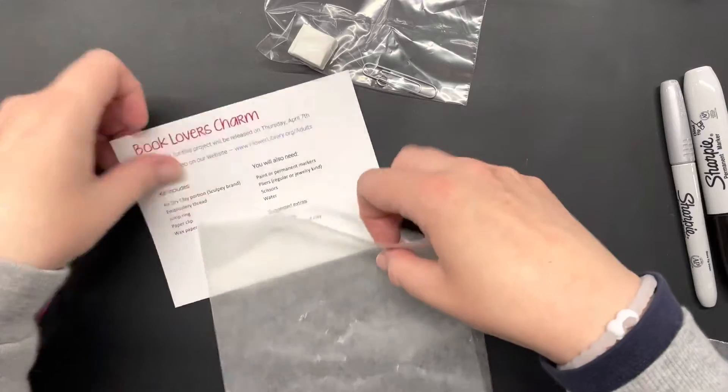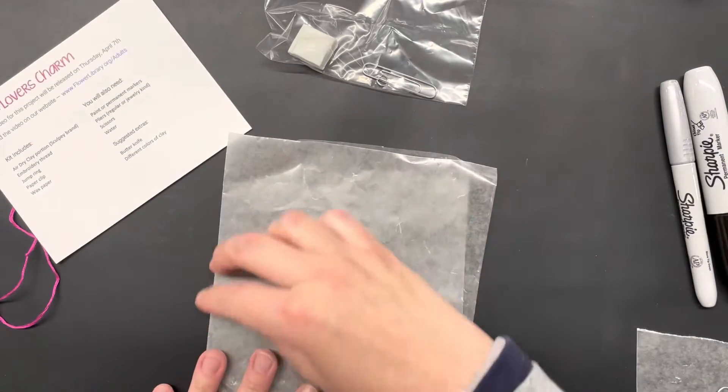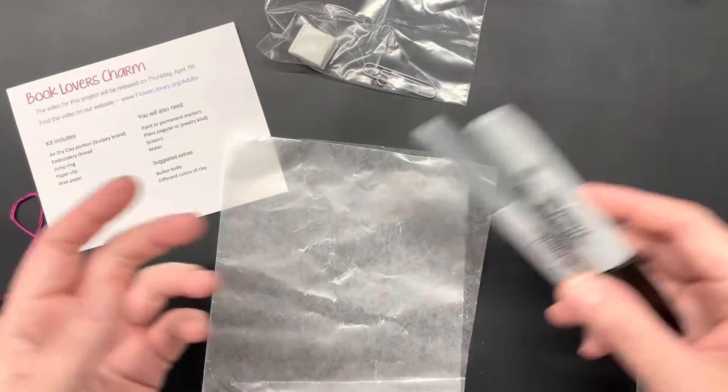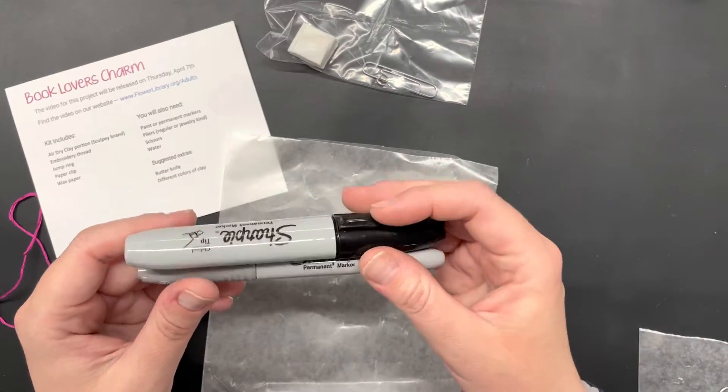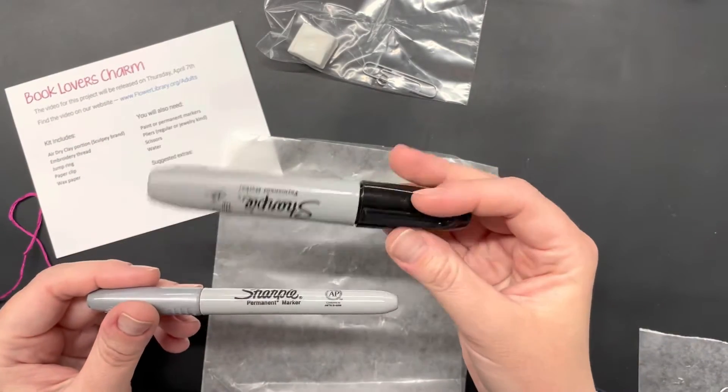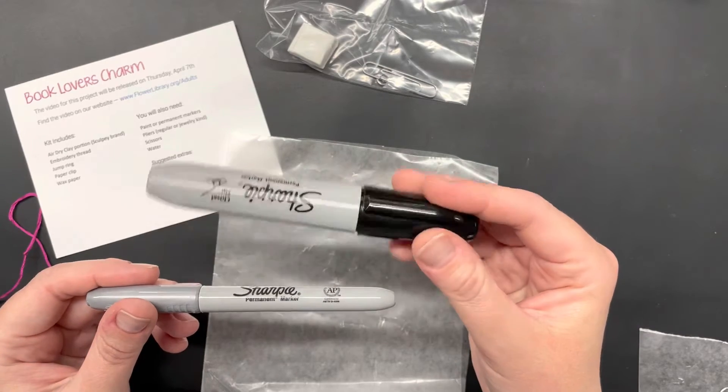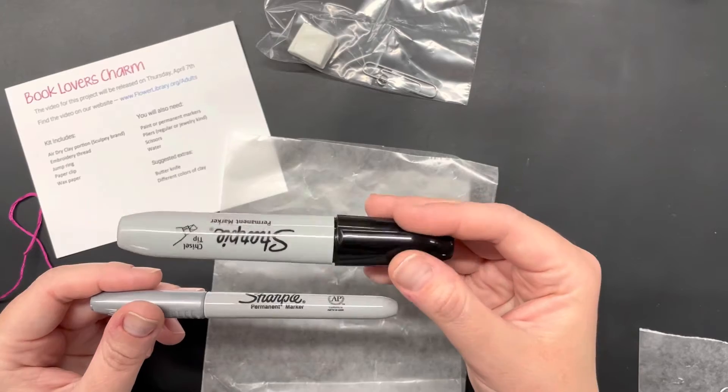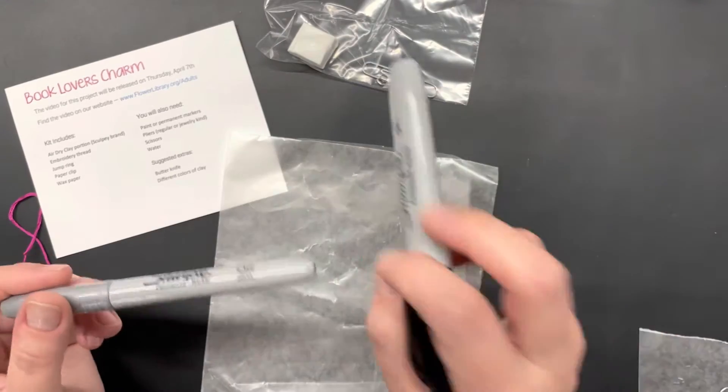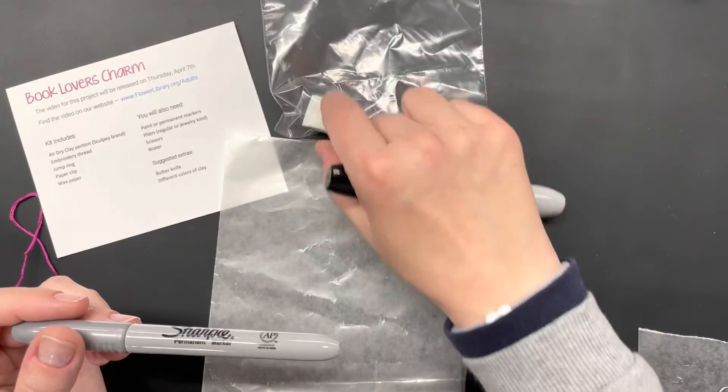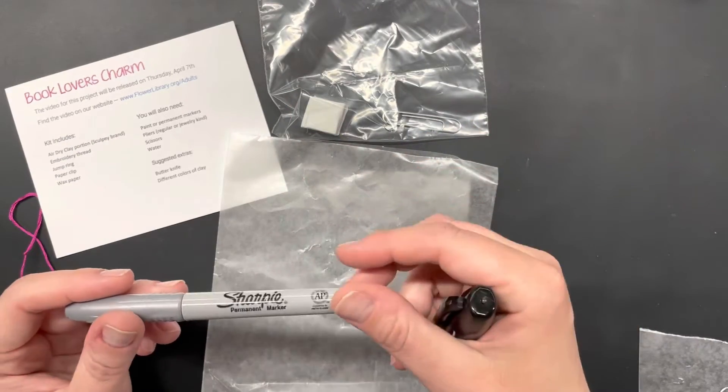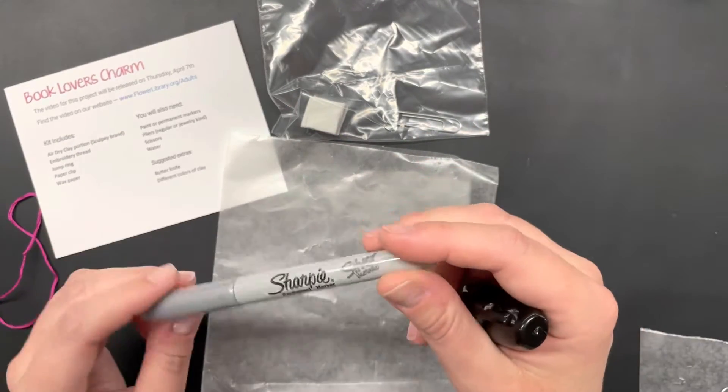This wax paper can be used as your surface as you prep your clay and as your piece dries. You will also need permanent markers or paint. The clay will pull the ink from the permanent marker through since it's a very porous surface, so if you're looking for a very clean finish you might want to use like a Mod Podge or other sealant on your books or whatever you decide to make before you add paints or marker colorings.